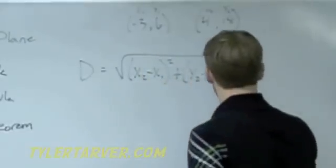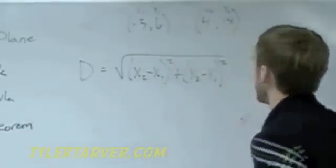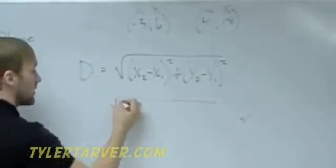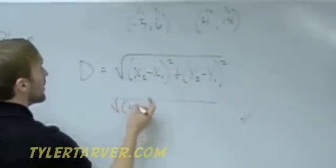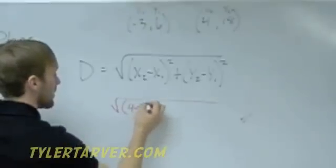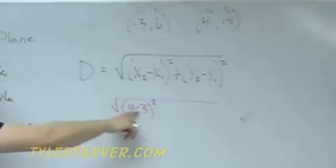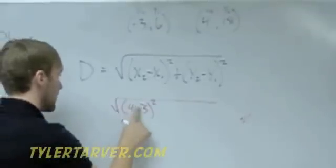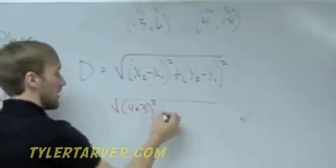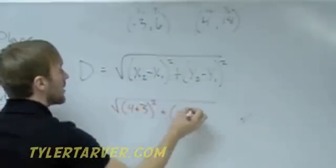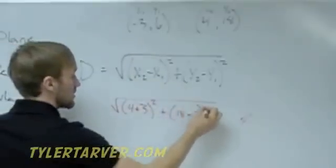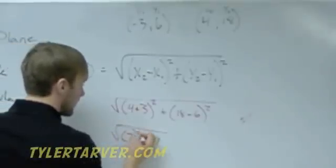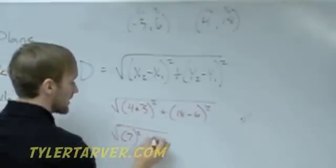Now, good deal. All we do is we plug our stuff in. Keep the formula the exact same. Square root sign. Our X2 is 4, minus our X1, which is negative 3. What happens when you minus a negative? Makes a positive. And then squared plus Y2 is 18, minus 6 squared. 4 plus 3 is 7. And then 18 minus 6 is 12.